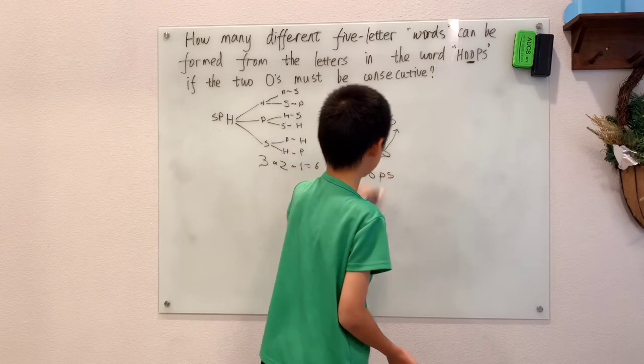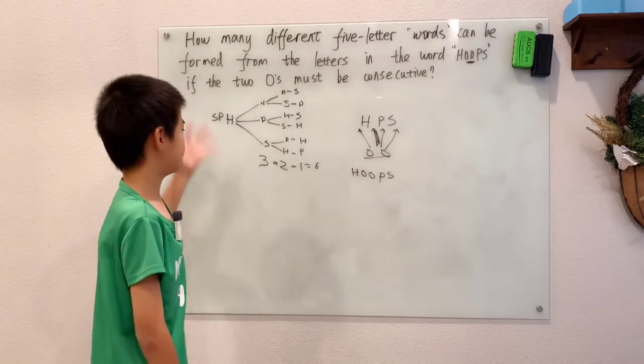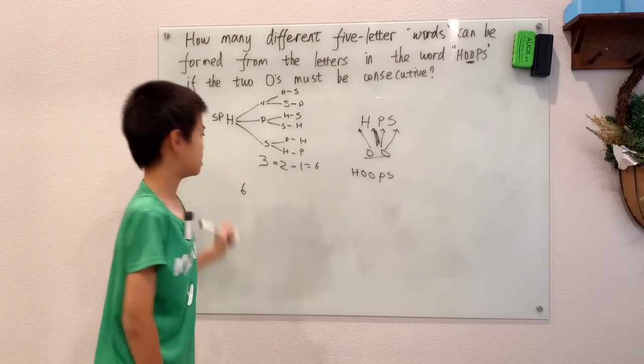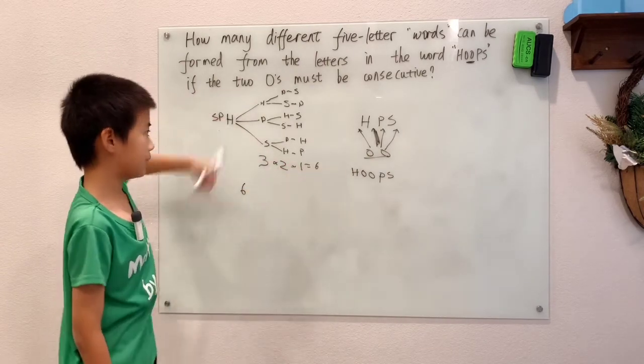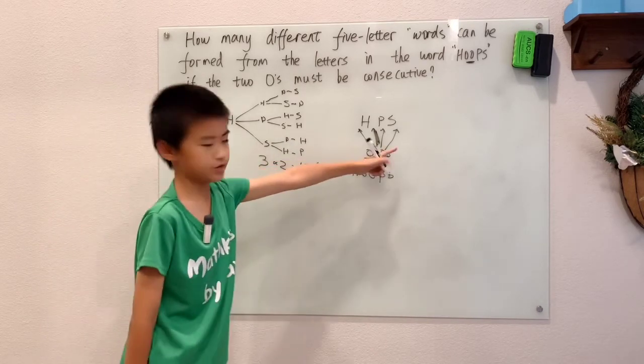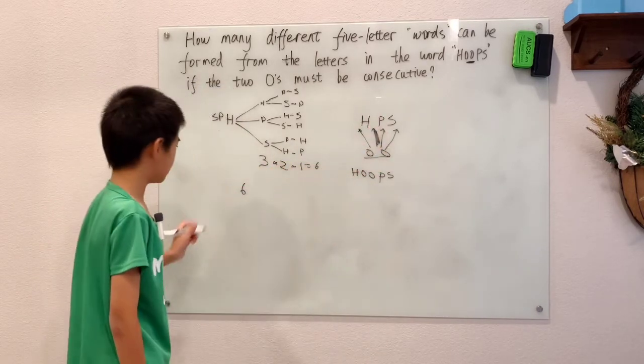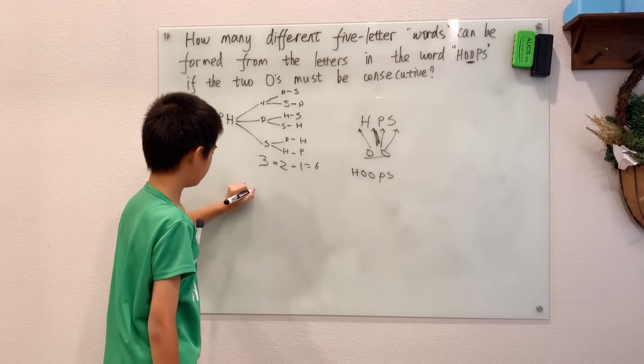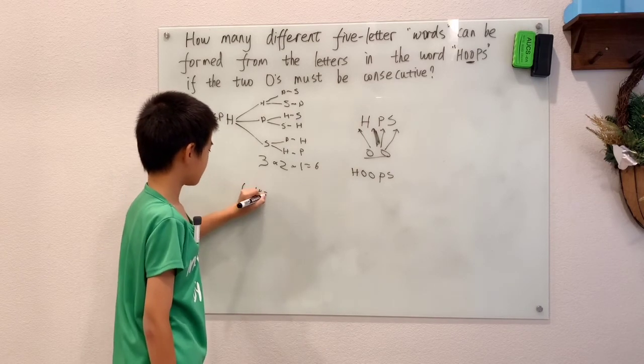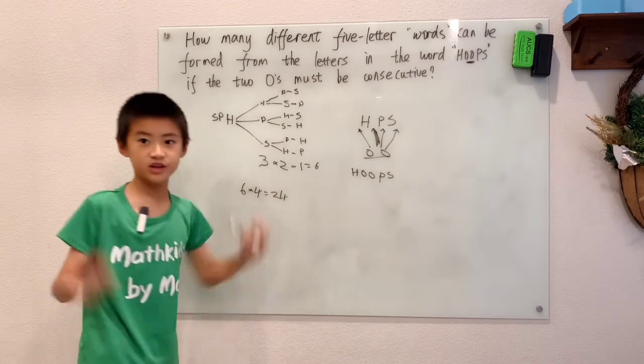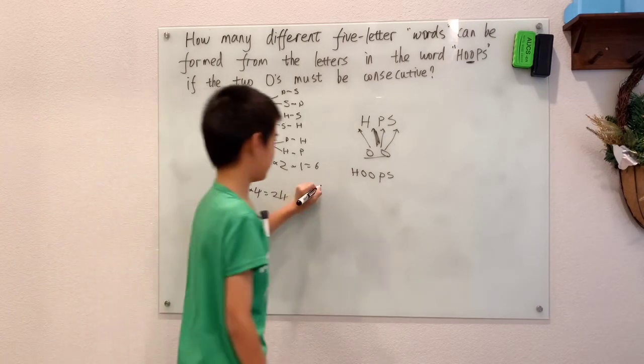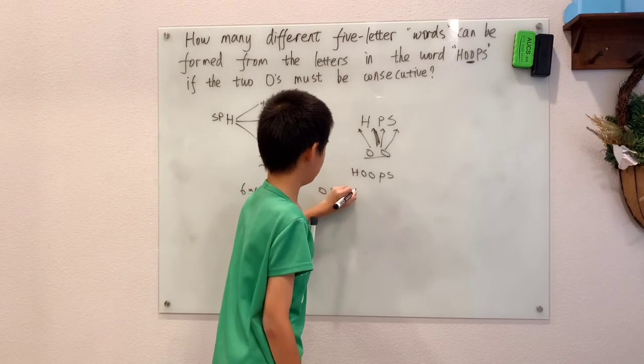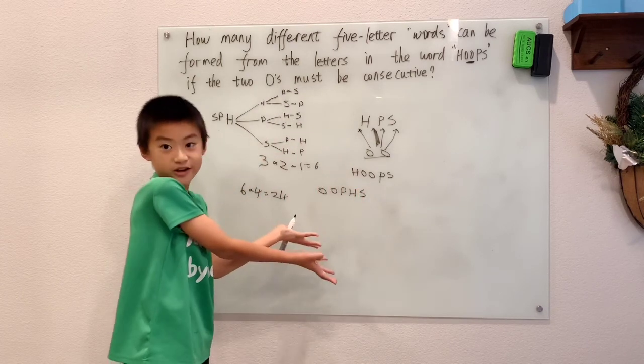...the word HOOPS. So there's six different combinations of the HPS, and there's four different places where the O's can come in, which makes 24 different so-called words, because this is not a real word.